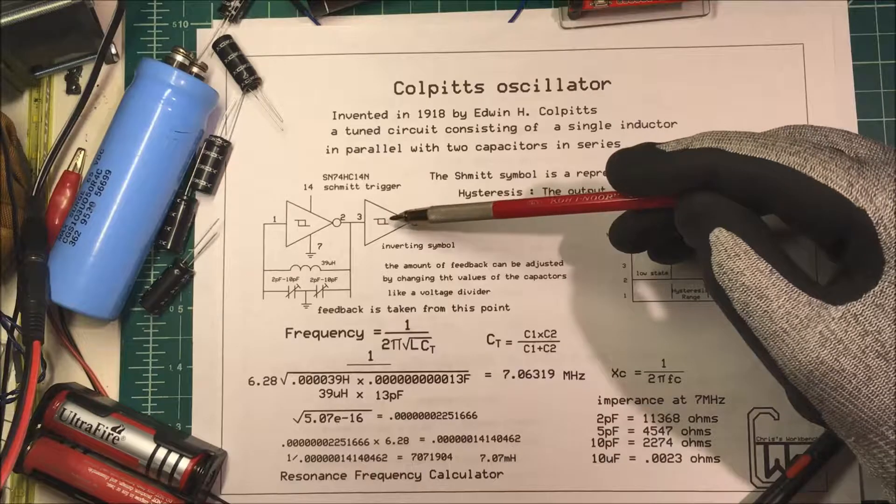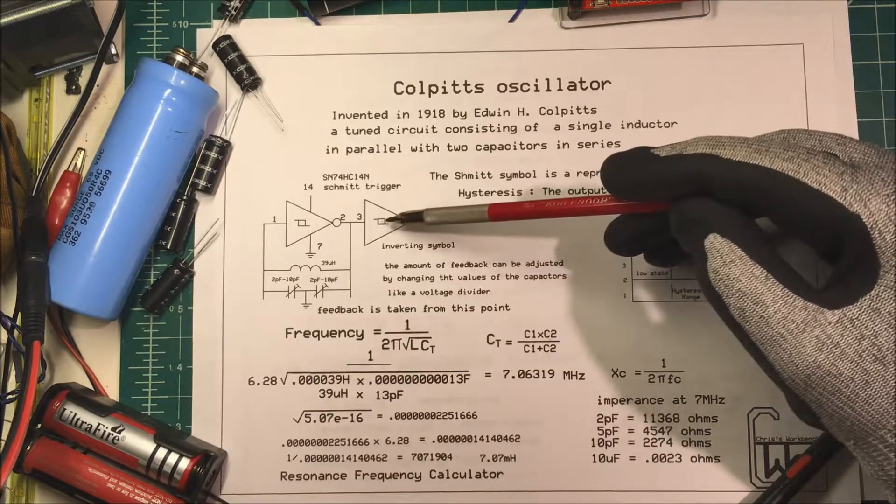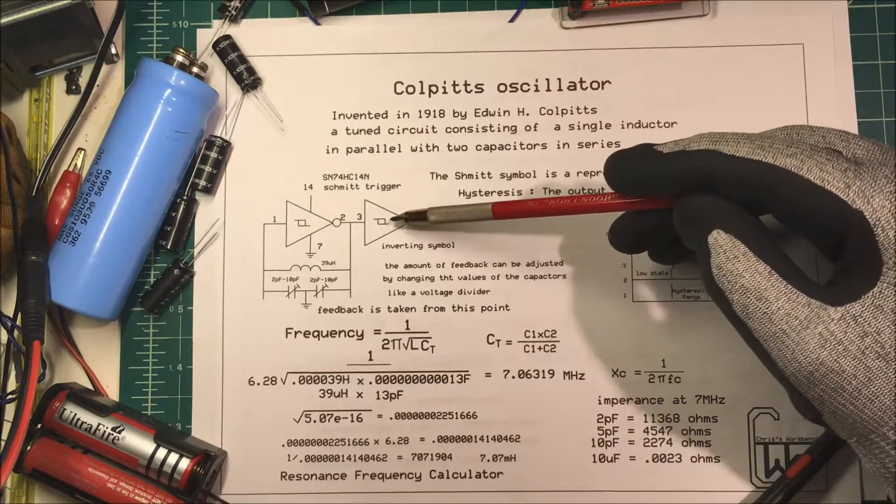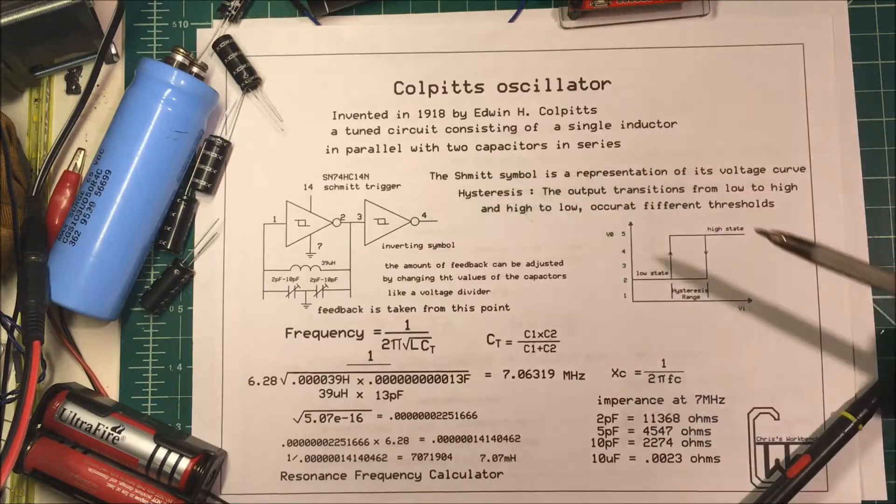Now I happen to be using these Schmidt triggers. You could use a comparator or an op-amp. This symbol here is the symbol for an inverting Schmidt trigger and it represents the voltage curve of the Schmidt trigger.